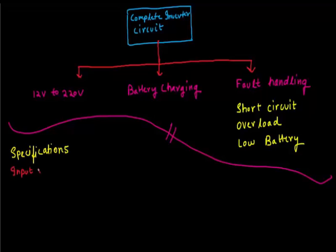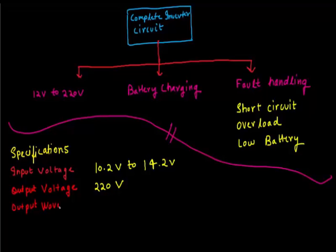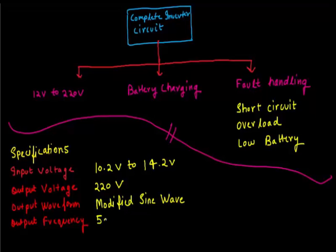Now I'll talk about the complete specification of the inverter that we are going to design in this video series. The input voltage as you can see is 10.2 volt to 14.2 volt, output voltage is 220 volt modified sine wave, output waveform is modified sine wave and output frequency is 50 hertz.